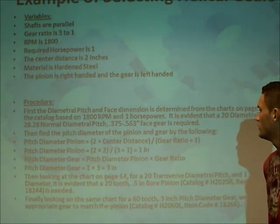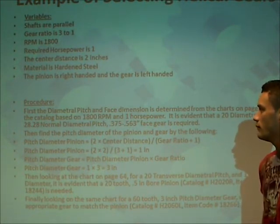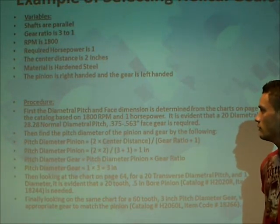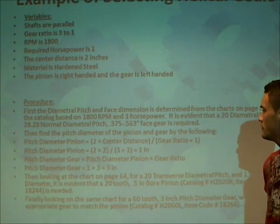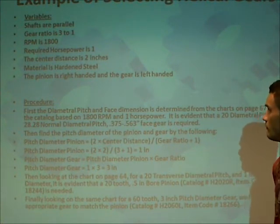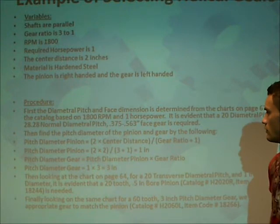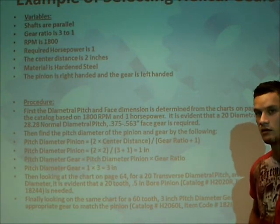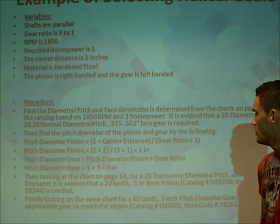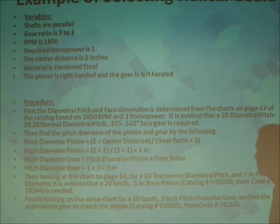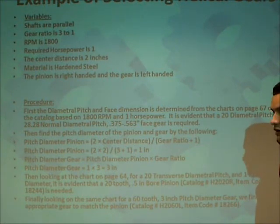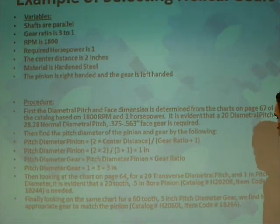The pitch diameter of the pinion and gear selection is found by the equation: pitch diameter of pinion equals 2 times the center distance divided by the gear ratio plus 1. Since the gear ratio is 3 to 1, that gives us 4 divided by 4, which is a 1-inch pitch diameter. The pitch diameter of the gear equals the pitch diameter of the pinion times the gear ratio, giving a pitch diameter of 3 inches. Looking at the chart on page 64, for 20 transverse diametral pitch and 1-inch pitch diameter, a 20-tooth, half-inch bore pinion is needed — catalog number H2020R, item code 18244.